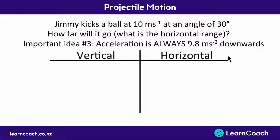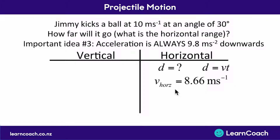We want to know how far the ball goes horizontally, so that goes in the horizontal column of our table — that's a distance. The most common distance equation is distance equals velocity multiplied by time. We already know the horizontal velocity is 8.66 meters per second, but we still need to know the time. Since time has no direction it links both columns, so we now flick over to list everything we know about the vertical movement.